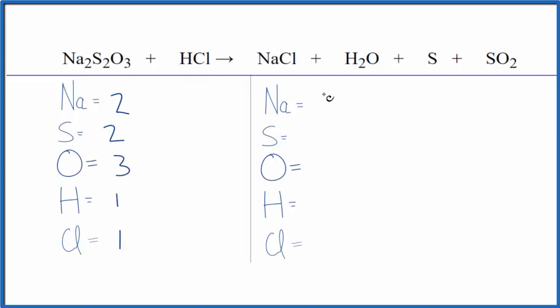Product side, we have one sodium, we have one sulfur here, and make sure you count this sulfur as well. So you have two sulfur atoms, oxygen one, plus we have the two here in the SO2. So we have three oxygen atoms, two hydrogen atoms, and just the one chlorine atom.